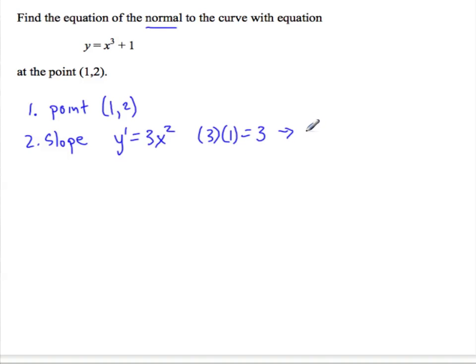which would be a slope of negative 1 third. It's the opposite reciprocal. So just flip it and make it negative, or opposite if it already was negative.